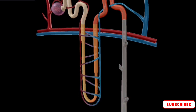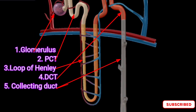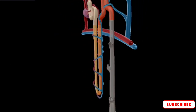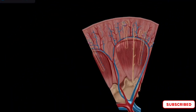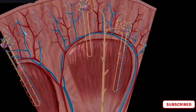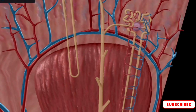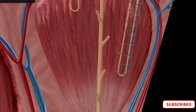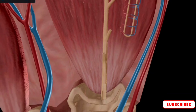The renal tubule consists of several segments, including the proximal convoluted tubule, the loop of Henle, and the distal convoluted tubule. There are two types of nephrons: cortical and juxtamedullary. Cortical nephrons are located primarily in the cortex of the kidney and have a shorter loop of Henle. Juxtamedullary nephrons are located at the border between the cortex and the medulla and have a longer loop of Henle that extends deep into the medulla.